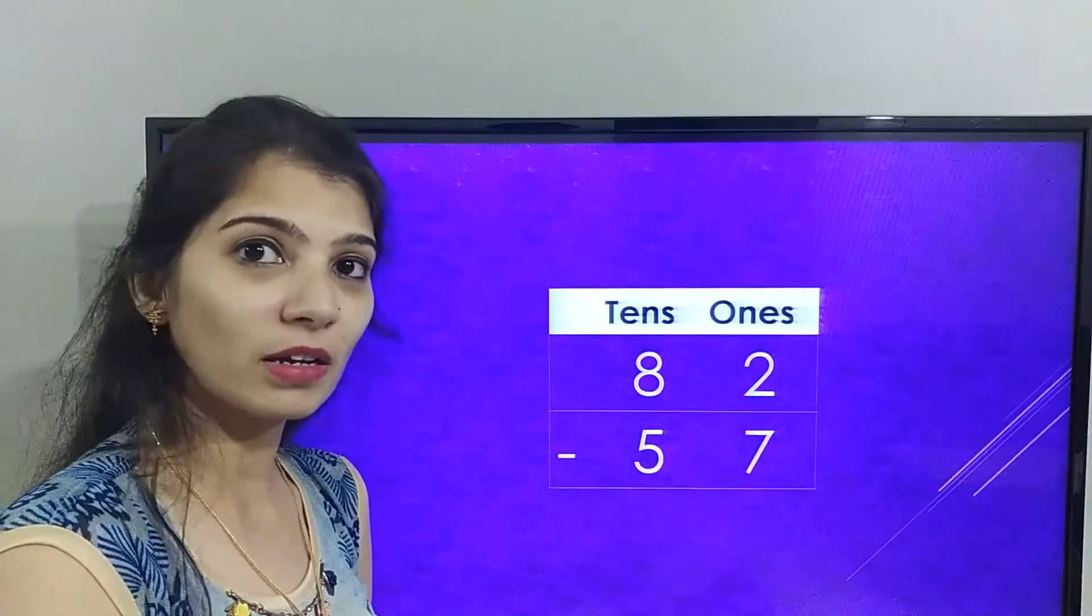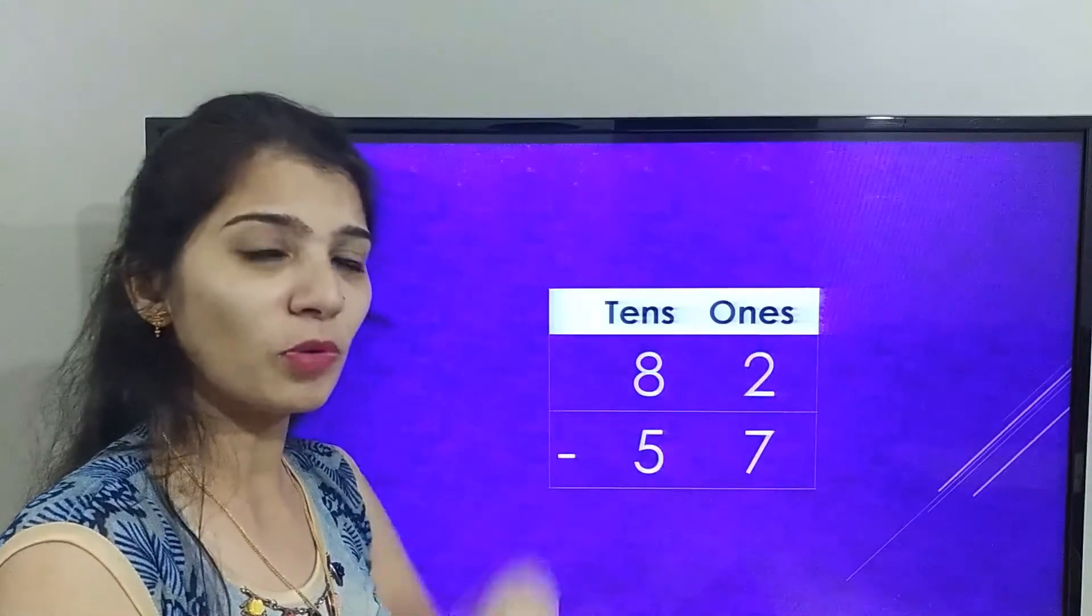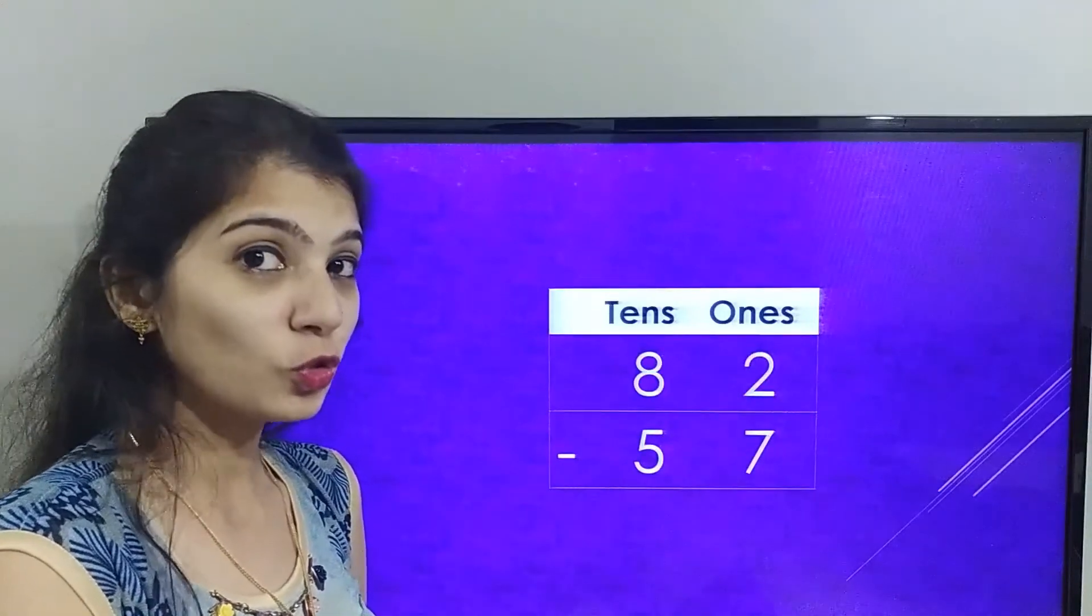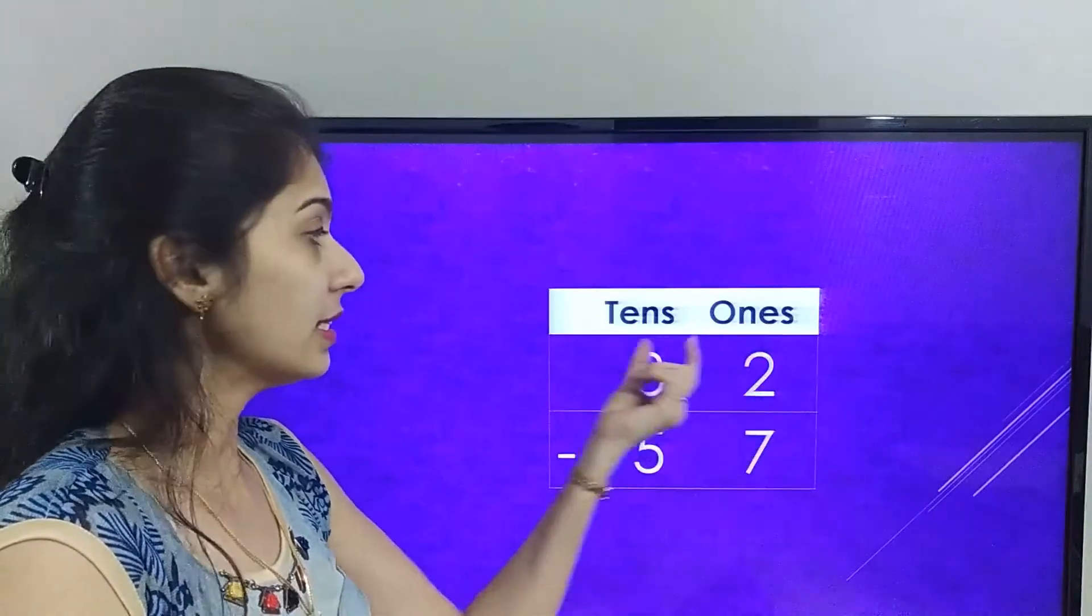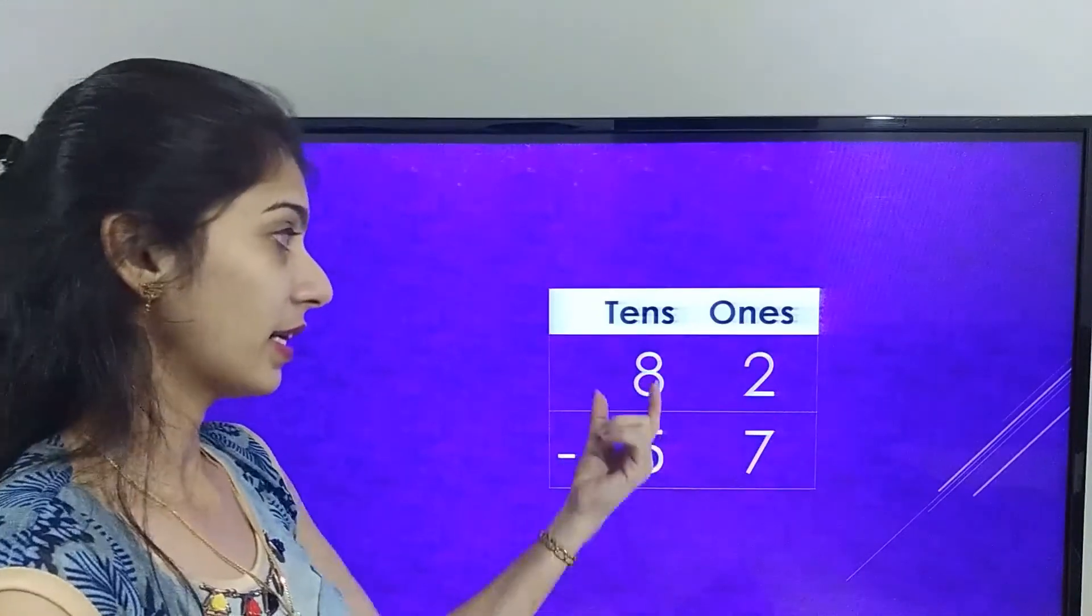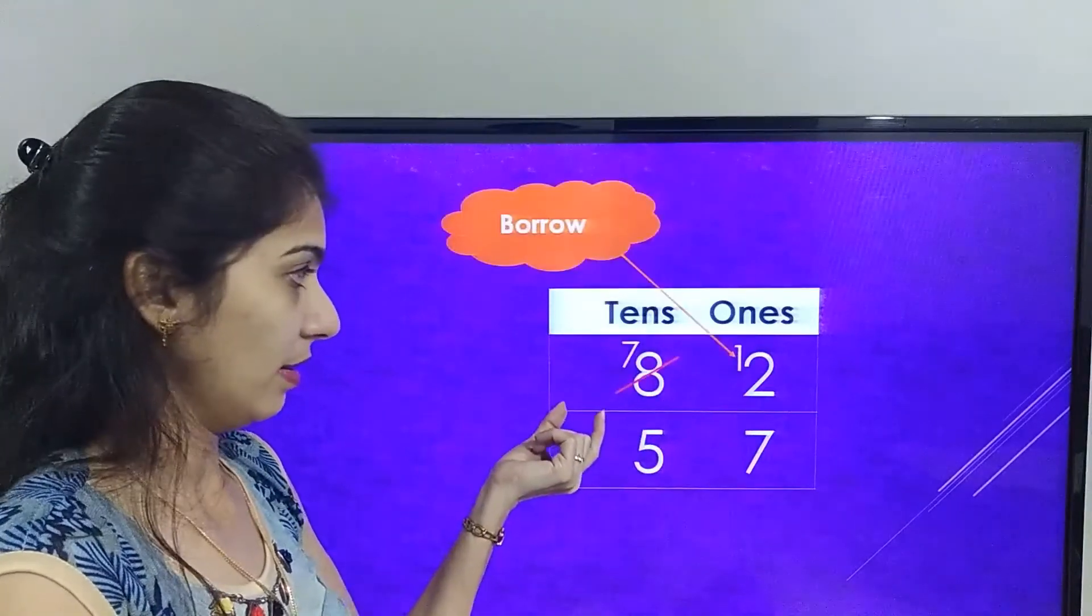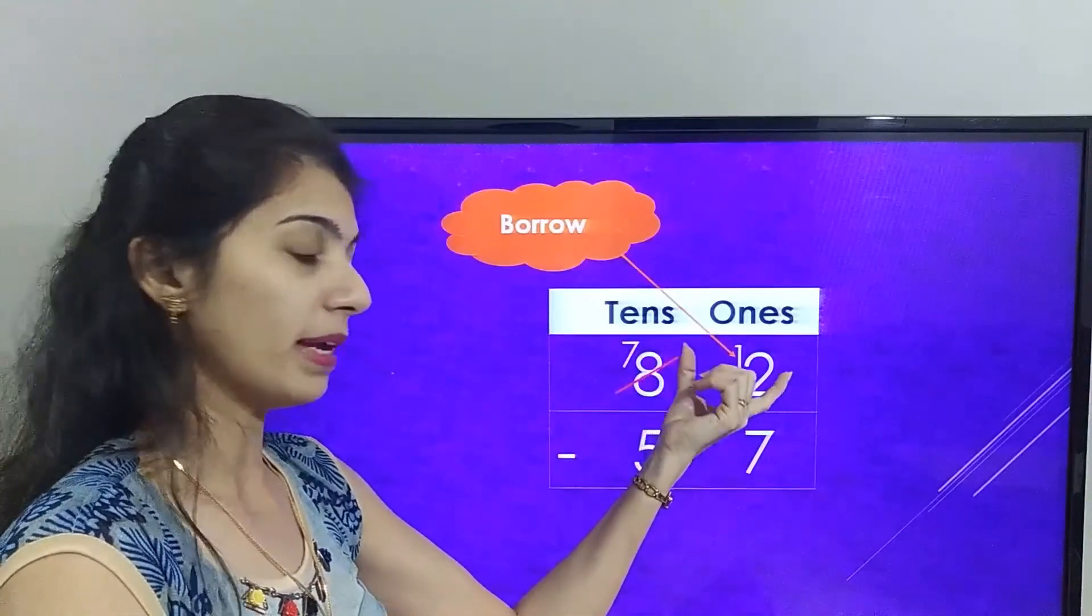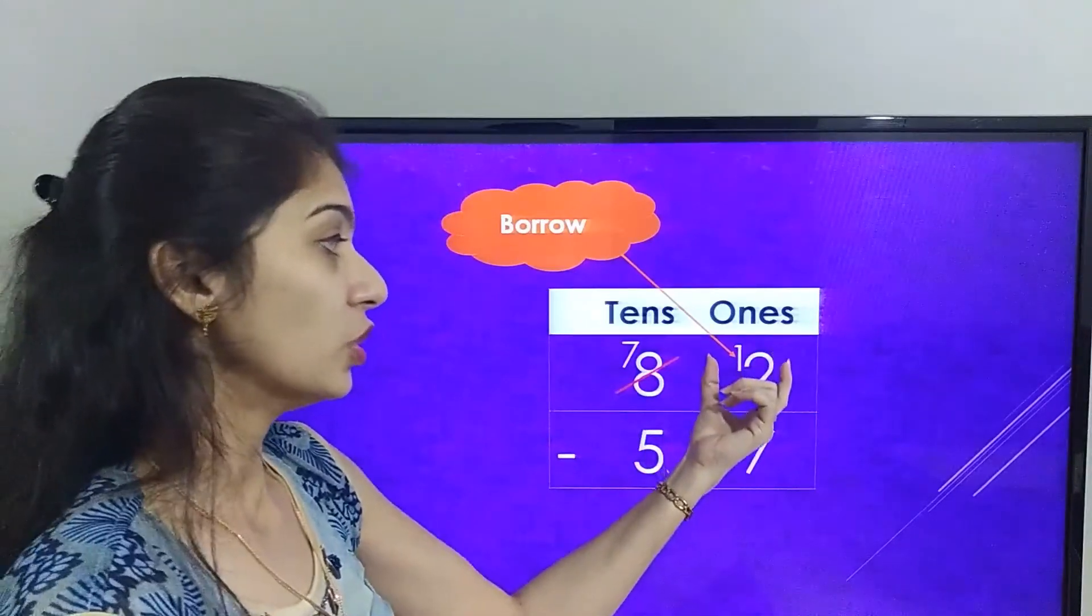So 2 will borrow from the neighbor. So 2's neighbor is 8. So we'll cut 8 and make it 7, and 2 will become 12.